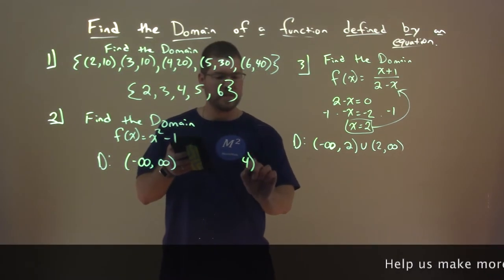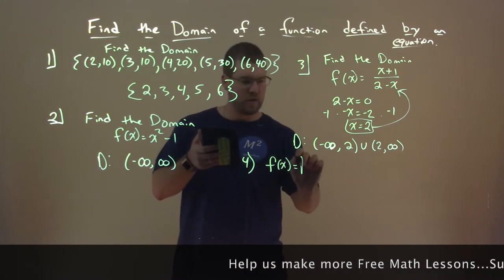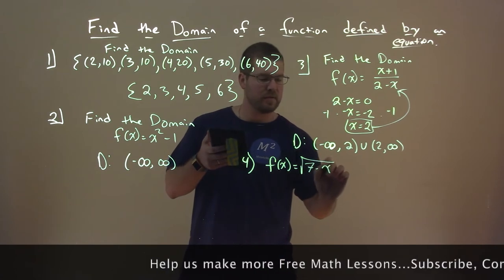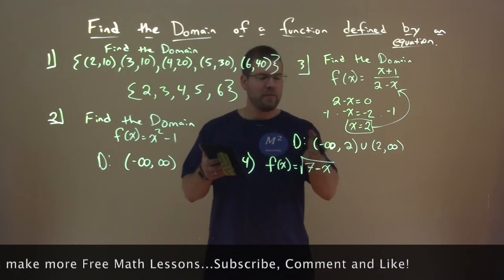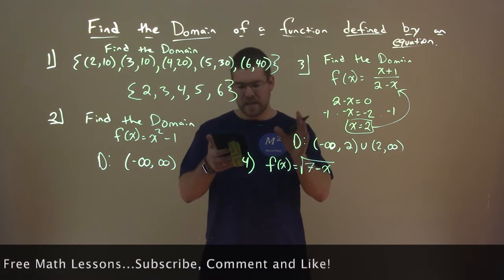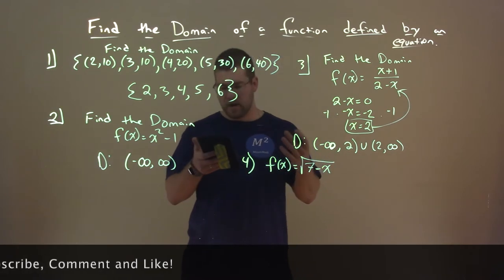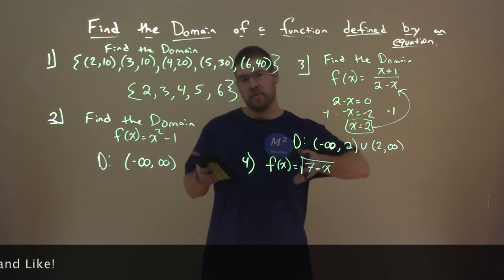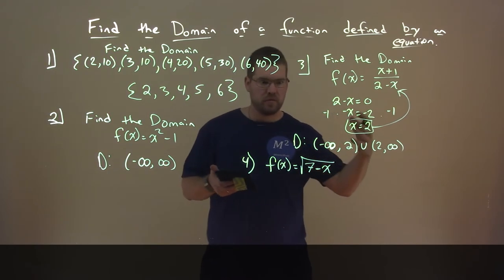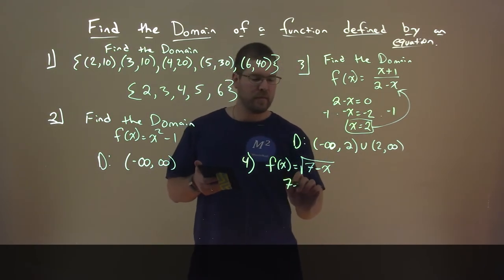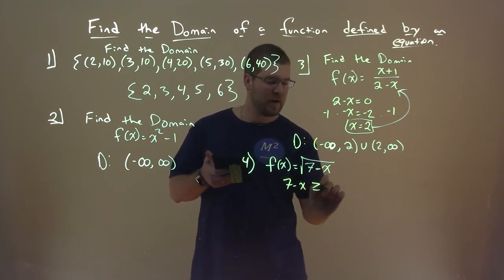Number 4 — same idea, find the domain. We have F of X equals the square root of 7 minus X. We know that inside the square root, 7 minus X has to be greater than or equal to 0. We're not allowed to have a negative number inside the square root — if we do, that's imaginary. So we take 7 minus X and say that value has to be greater than or equal to 0.